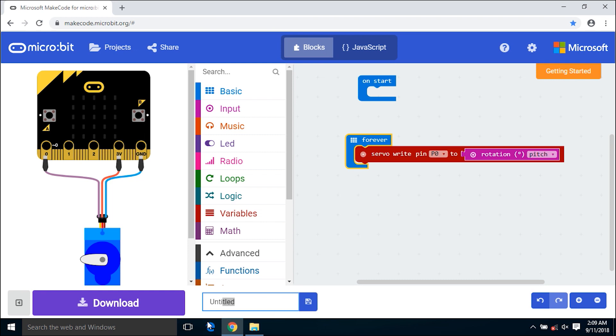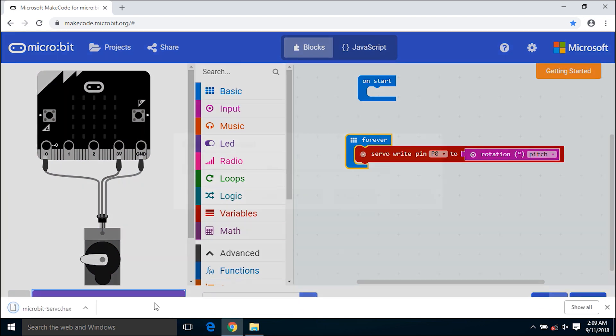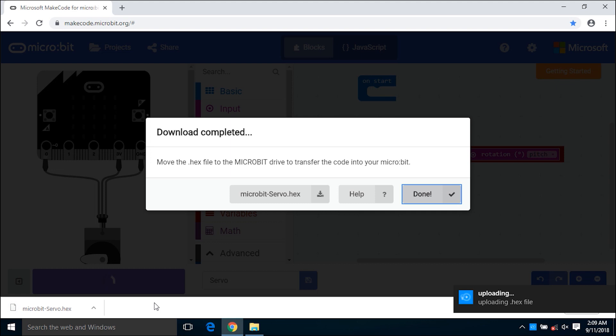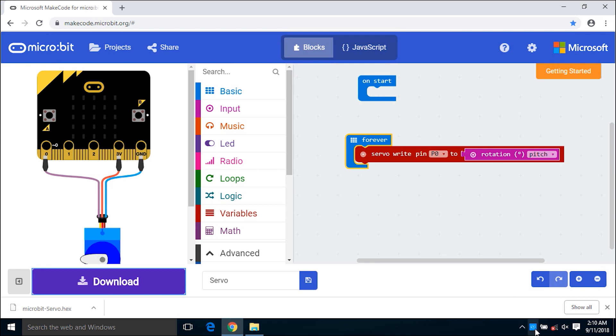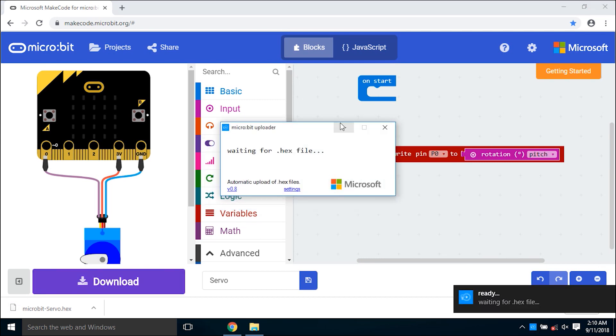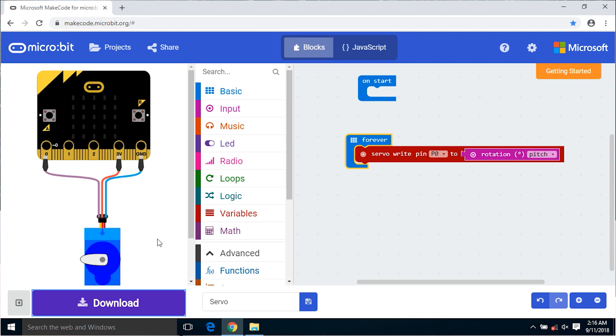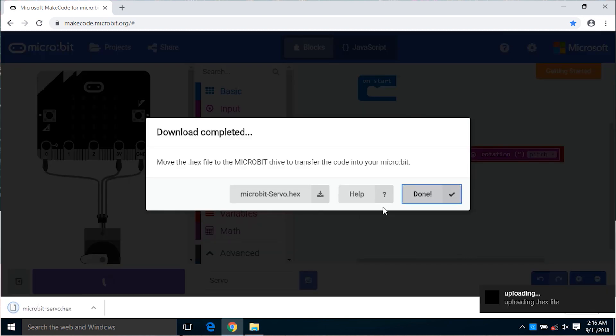Now we finish programming and we change the name here, then download to micro:bit. Download, it's done.